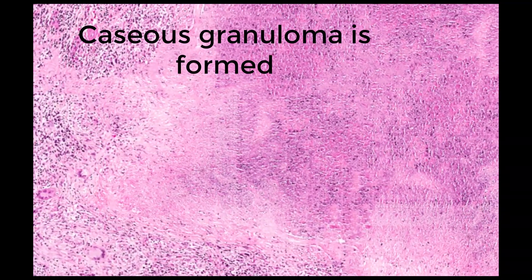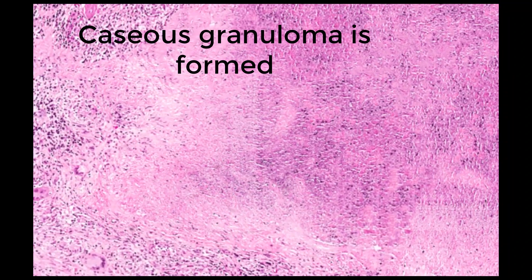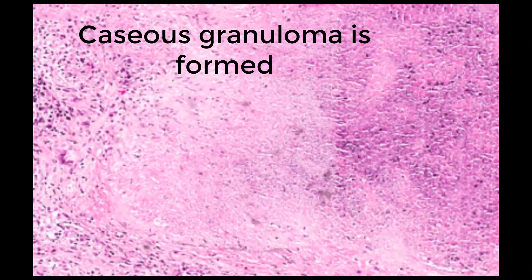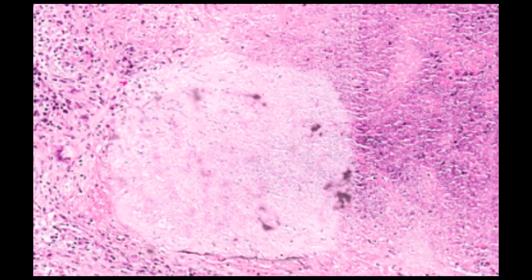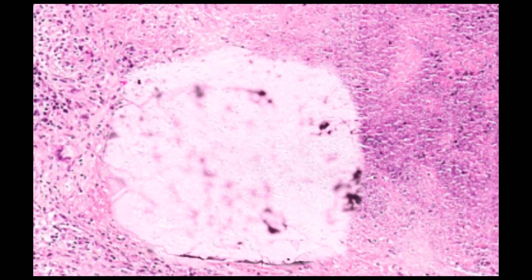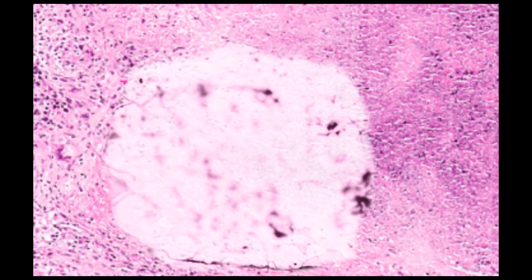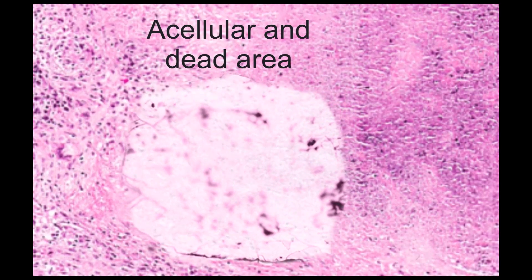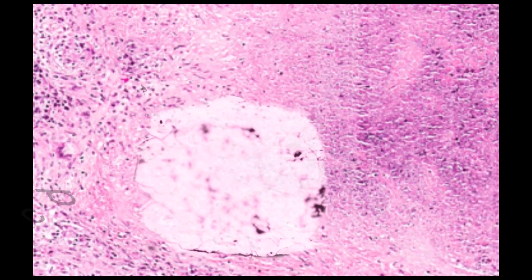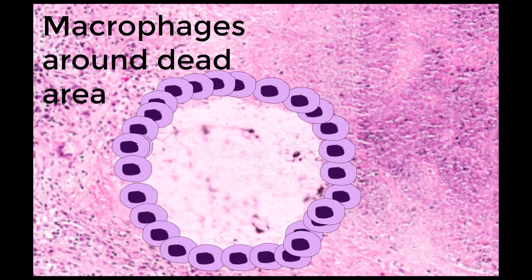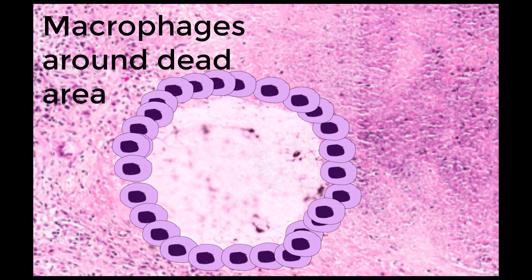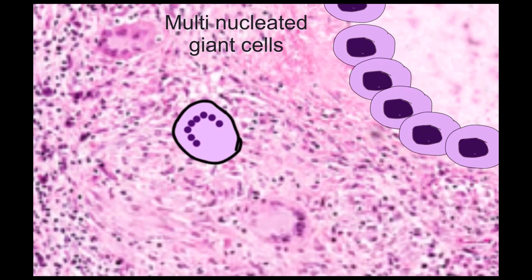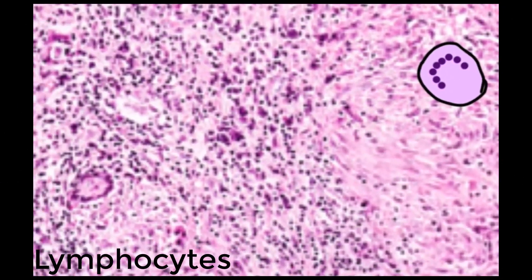Finally, granuloma is formed. Granuloma looks like a nodule with lots of inflammatory cells around it, and the middle region is acellular and dead — cell debris without nuclei. Granuloma is filled with lots of macrophages, multi-nucleated giant cells, and at the edge of the granuloma, lymphocytes are located.